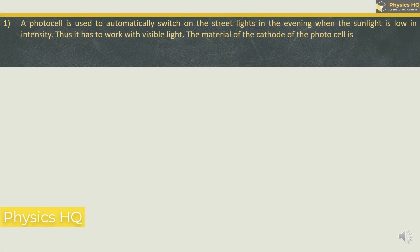A photocell is used to automatically switch on the streetlights in the evening when the sunlight is low in intensity. Thus, it has to work with visible light. The material of the cathode of the photocell is Zinc, Aluminium, Nickel, or Potassium.